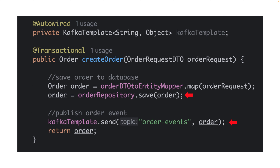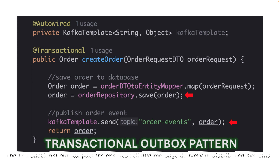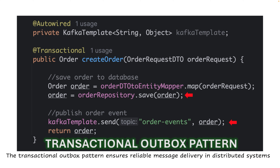How can we address this dual write problem and avoid data inconsistency? That's where the transactional outbox pattern comes in. The transactional outbox pattern ensures reliable message delivery in distributed systems and always guarantees data consistency. We can also use Saga, but Saga is a bit more complex compared to the transactional outbox pattern.